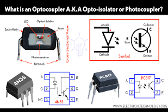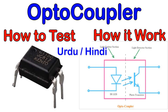Here's how an optocoupler generally works. The input section of an optocoupler consists primarily of a light-emitting diode (LED). The purpose of this section is to convert an electrical signal, such as a voltage or current input, into light.